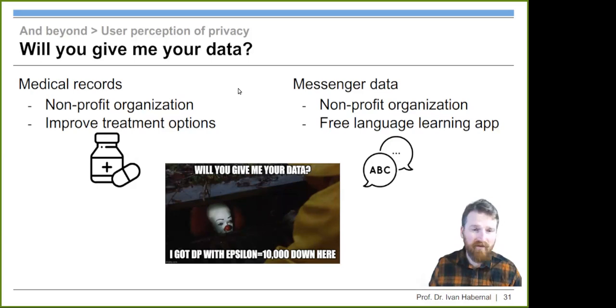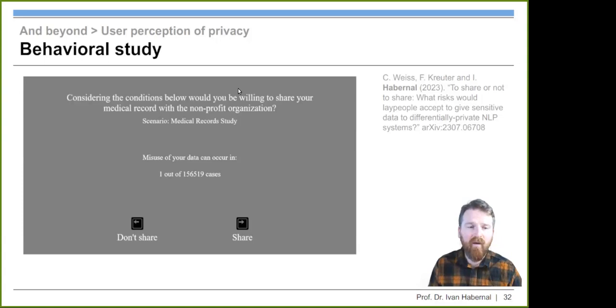The good thing about differential privacy is that you can express it as probability. Probability of your data will be leaked somehow can be expressed and you can express probabilities for people as natural frequency. One out of 10 million, maybe your data will be leaked or one out of thousand, your data will be revealed. You can let people guess the frequencies, and then let people answer whether they will share or don't share the data under these circumstances. We ran it on a prolific platform for a couple of weeks with more than 250 participants and everybody answered hundreds of these questions to make it really a robust estimate.